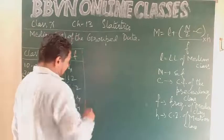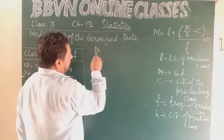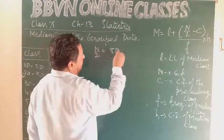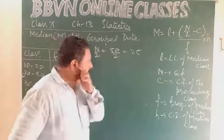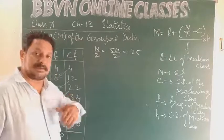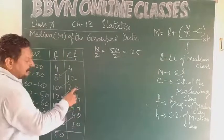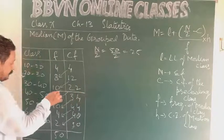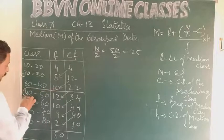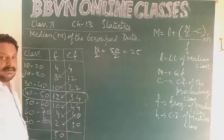According to the formula, check what is N upon 2. N upon 2 is 50 upon 2, that is 25. Now look for the cumulative frequency which comes after 25. So 34. 22 is less than 25, next is 34. So this is the very next cumulative frequency which comes after N upon 2, that is 25. So this is our median class.